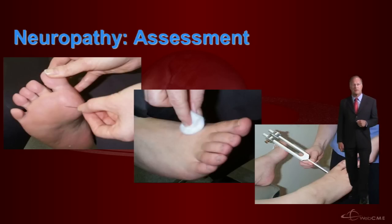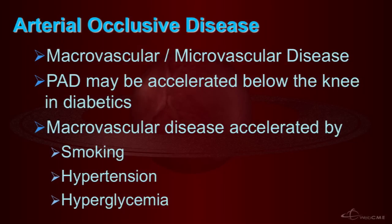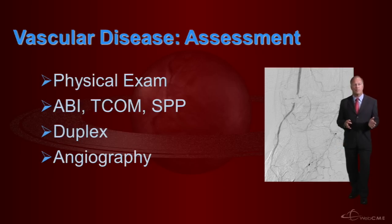We need to be very aggressive in assessment of neuropathy through Semmes-Weinstein testing, vibration testing, and other technologies. Peripheral arterial occlusive disease is evident on both a macrovascular and microvascular standpoint. Diabetics may show accelerated disease below the knees, and those who smoke, have hypertension, or have hyperglycemia show acceleration of peripheral arterial disease. Assessment starts with physical examination, leading to non-invasive tests such as ankle-brachial indices, transcutaneous oximetry, and skin perfusion pressure analysis. Many will require duplex sonography and some will go on to formal angiography for potential intervention.